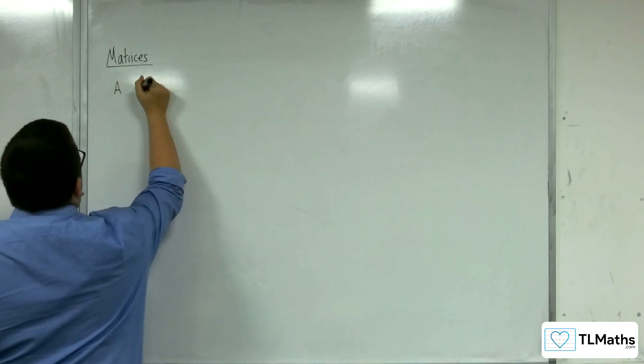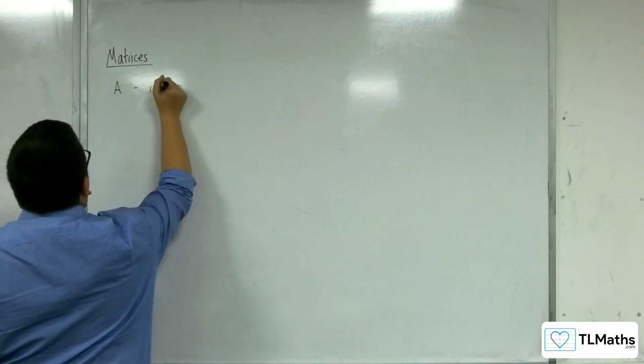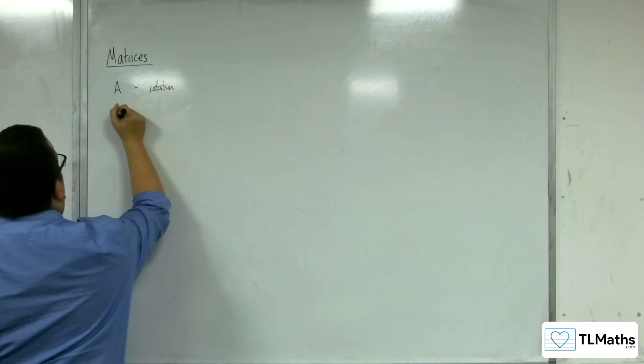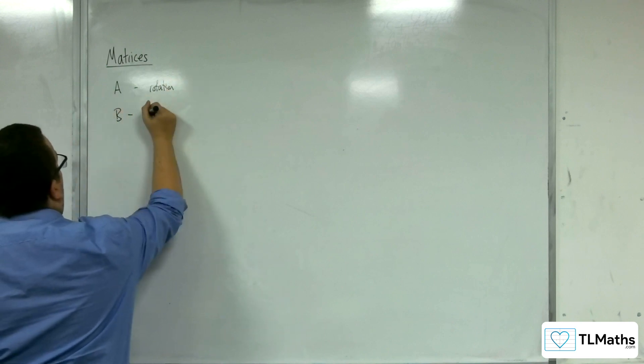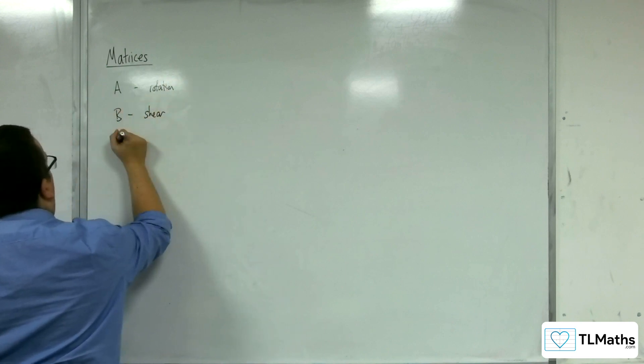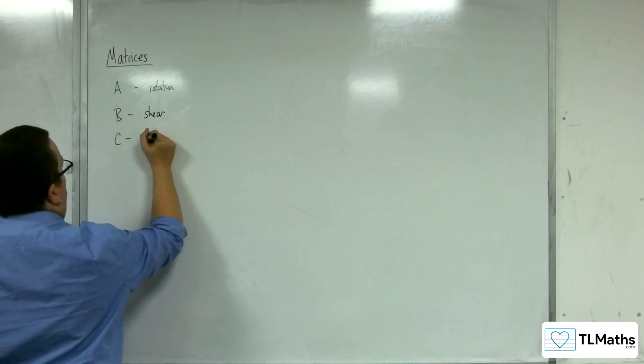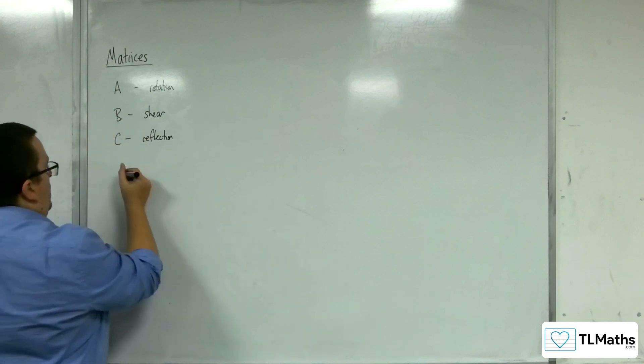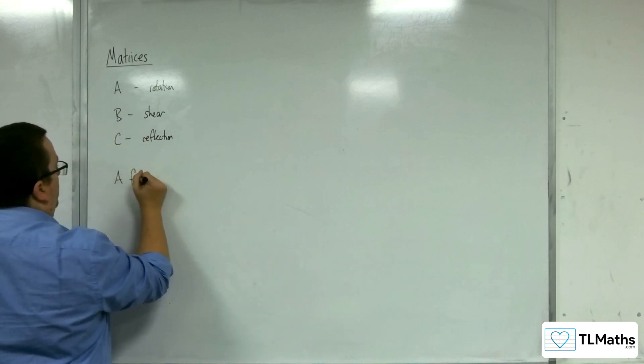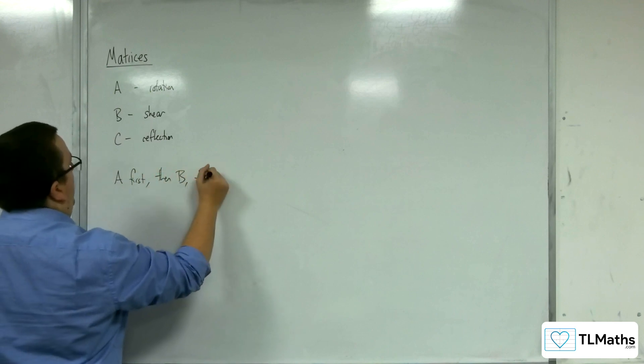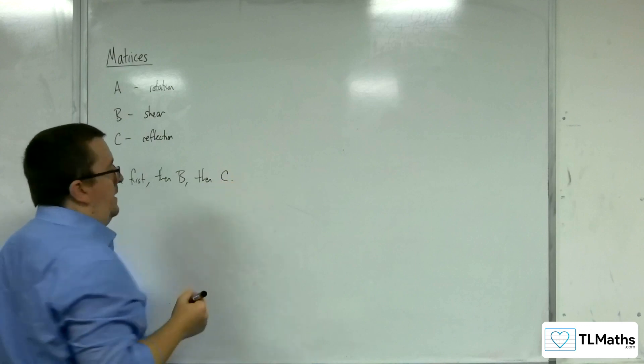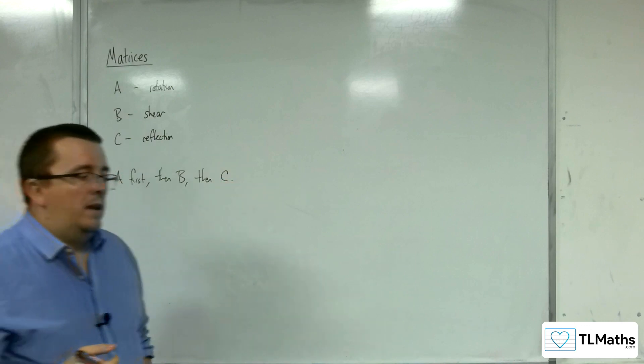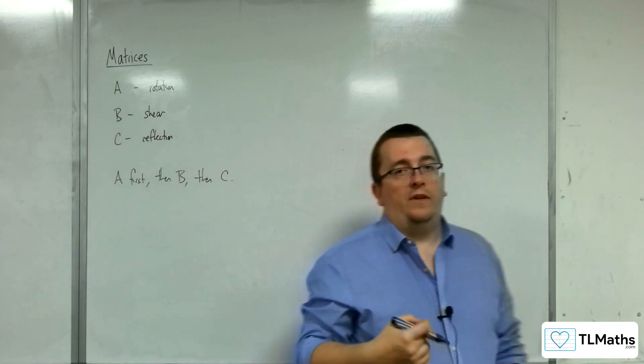So let's say we have a few matrices. Let's say that A is a rotation and B is a shear and C is a reflection. And I want to do the rotation first, then B, then C. So how do I do that with matrices?